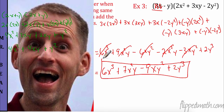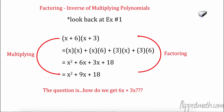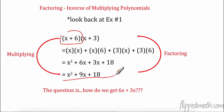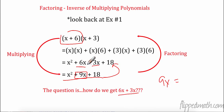That is multiplying polynomials. Now in a second we're going to do these backwards — we're going to factor. Looking back at our very first example: (x + 6)(x + 3) expanded to x² + 9x + 18. To factor, we need to split 9x into 6x and 3x, because 6 times 3 equals 18 and 6 plus 3 equals 9. That's exactly what we're going to be doing.